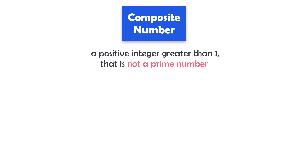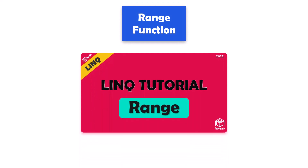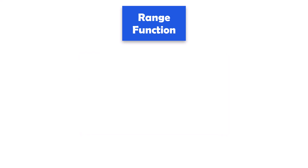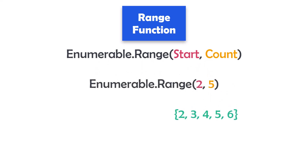One last thing we have to know is how to use the Range function. I already explained this function in another video, but I will do a small recap. This function generates a sequence of integer numbers. It has two input parameters: start and count. The start is the first number to be generated, and the count is how many numbers should be generated. For example, it can return a sequence starting at 2 with 5 numbers: 2, 3, 4, 5, 6.